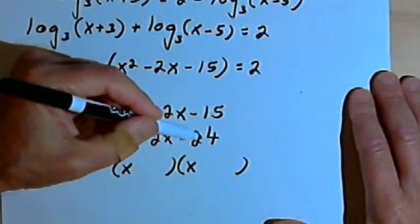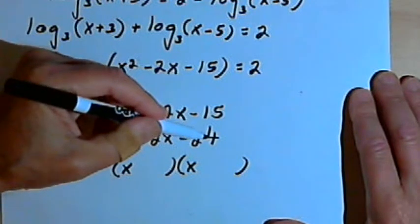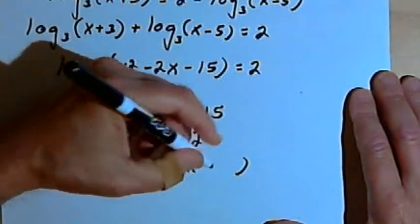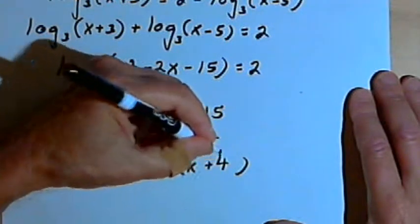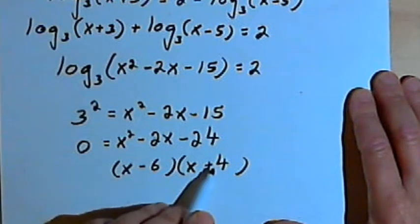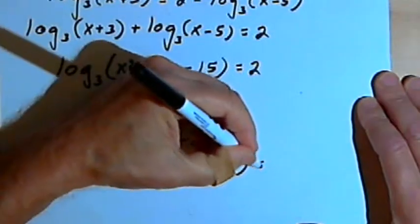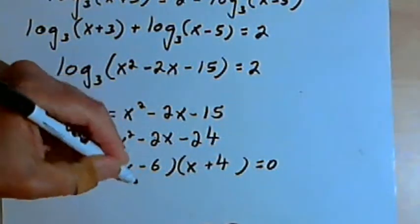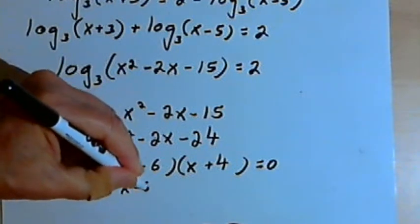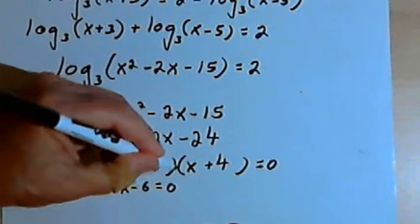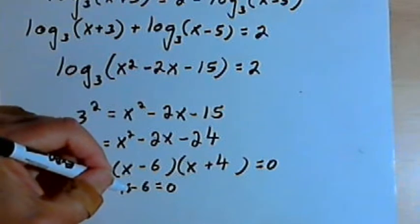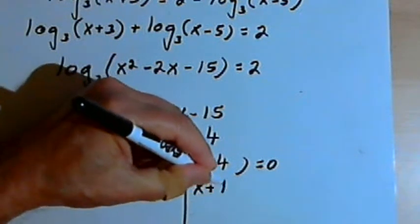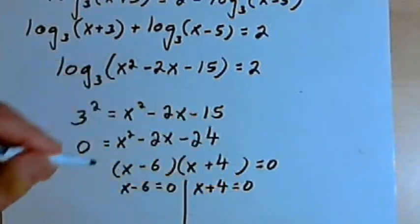24 is 6 times 4. So I can have x minus 6 and x plus 4. That would factor it out nicely. And I'll set that equal to zero. And now if I've got x minus 6 as a factor, I'll have x minus 6 equals zero. And x plus 4 equals zero.